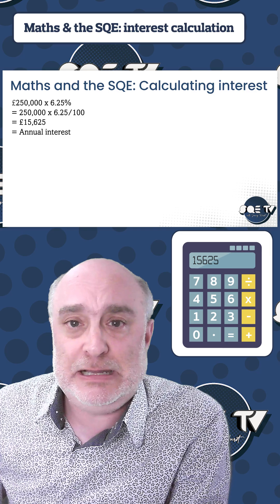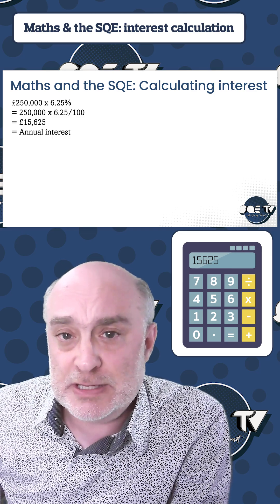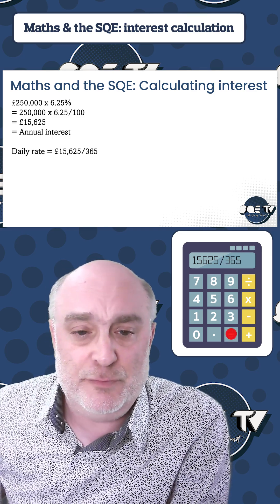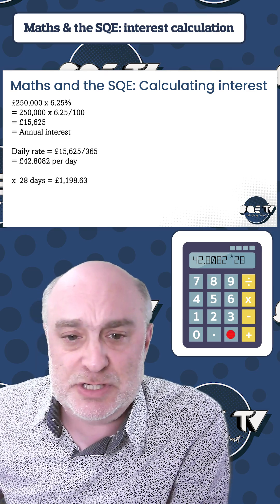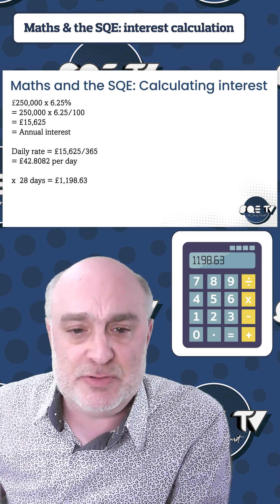You therefore need to calculate the daily rate first of all, dividing that by 365, which gives you £42.8082 per day. Multiply that by the 28 days you need to borrow, which comes to £1,198.63.